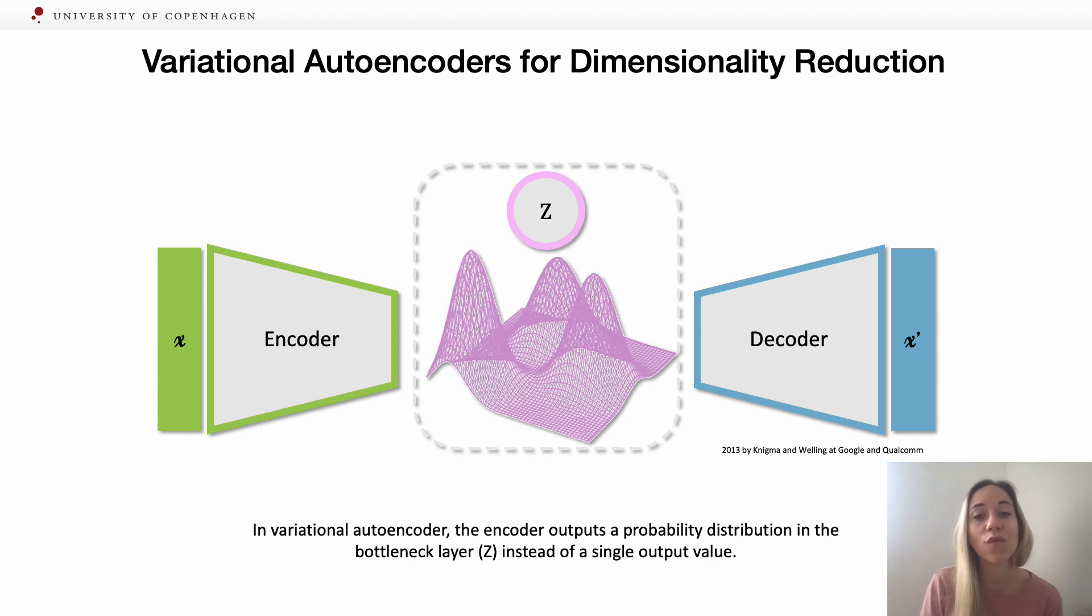To do so, variational autoencoders create a bottleneck Z, which is a lower representation of the input. Therefore, it keeps only the meaningful information that the decoder needs to reconstruct the original input. Extracting this bottleneck Z, we can capture the deep linear and non-linear correlations in a dimensionality reduced space.